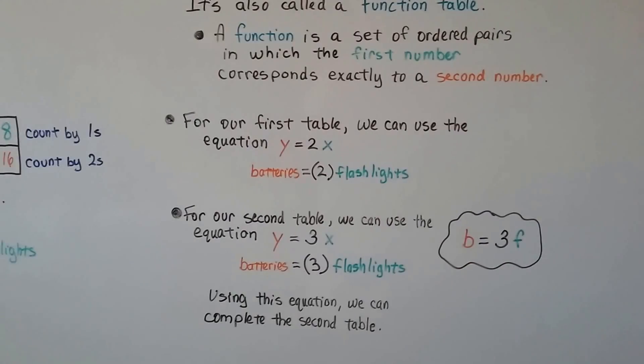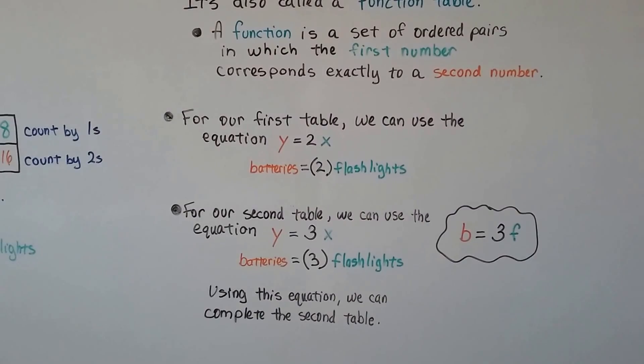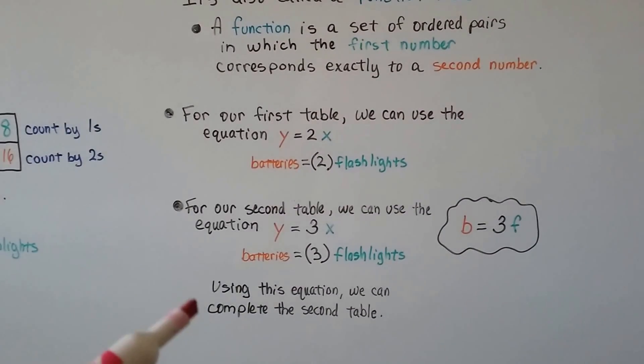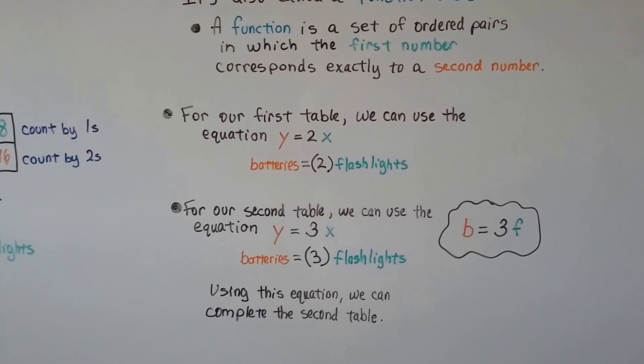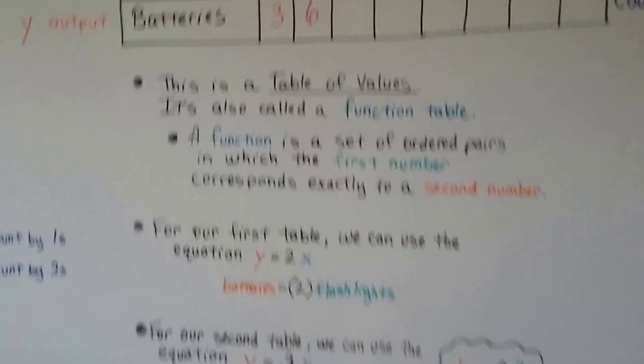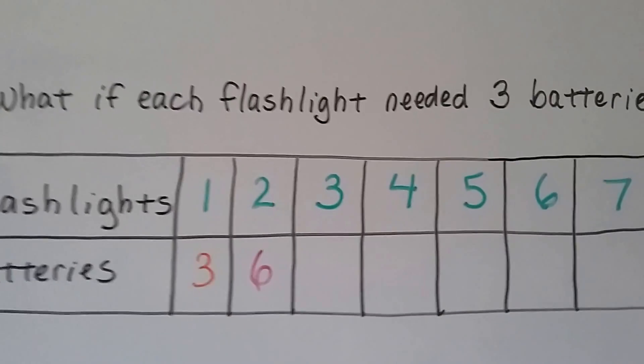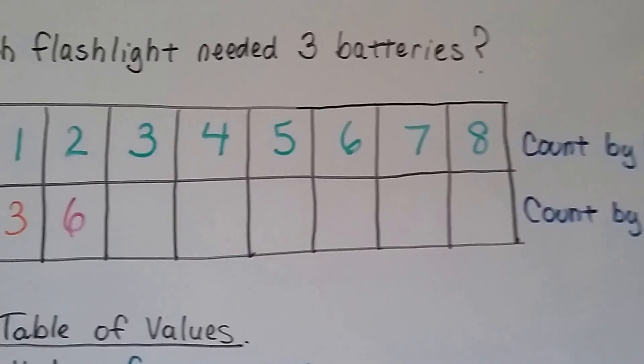It's just in math, they use X and Y a lot. They also use Z a lot. But using this equation, Y equals three X, we can complete the second table. Alright? So, we're going to multiply by three. We're going to count by threes.